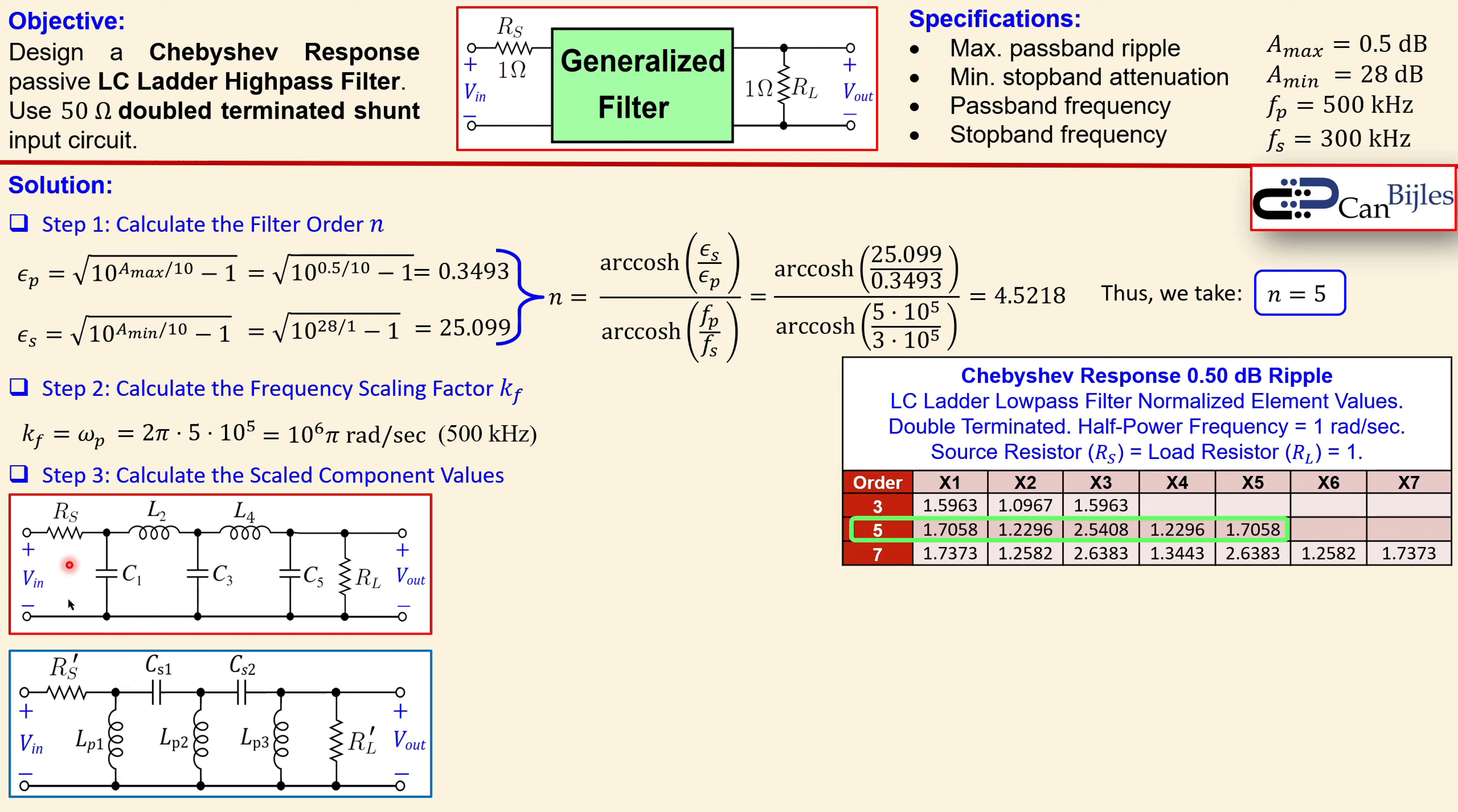So we need to transform this to a high pass configuration. You see here the c1 is transformed into an inductor which is shown here as lp1 which is parallel, and the l2 is transformed into a series capacitor. So everything which is a capacitor will be transformed into an inductor and everything which is an inductor will be transformed into a capacitor. We also scale up the rs, the source and the load resistor, and we give it by a prime, so that will be multiplied by 50. That will be also our magnitude scaling factor km, that is 50, because it requires a 50 ohm double terminated shunt input circuit.